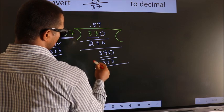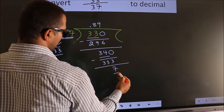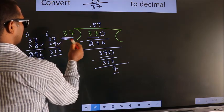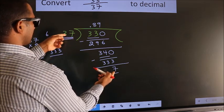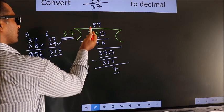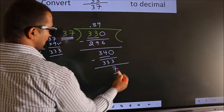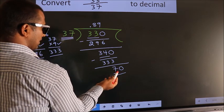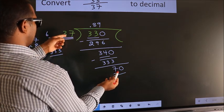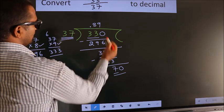Now we subtract. We get 7. Here we have 7. 37, 7 is smaller than 37, and we already have the decimal, so we can directly take 0. So 70. A number close to 70 in the 37 table is 37.